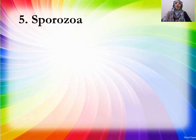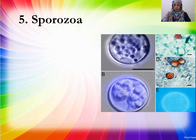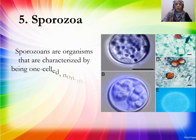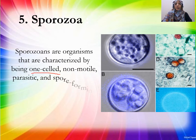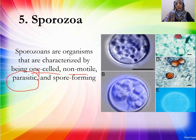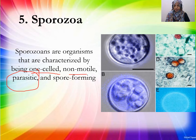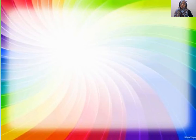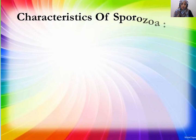The last class is Sporozoa. Sporozoa are single-celled organisms that are non-motile and parasitic — they depend on other organisms as a host. They are parasites that cause disease or damage to the host. They are spore-forming. The most characteristic feature of Sporozoa is their ability to form spore-like cells.